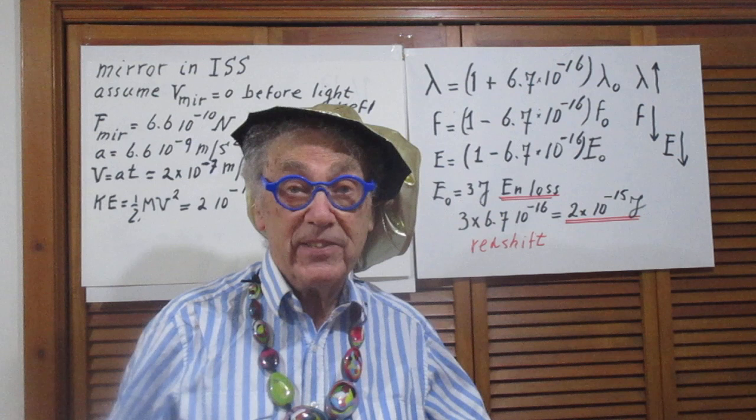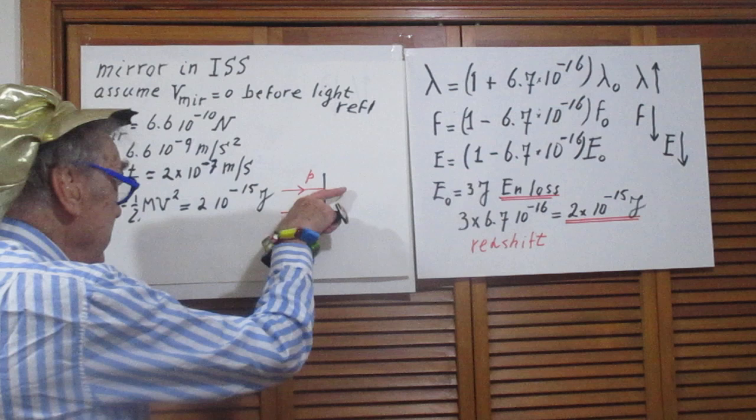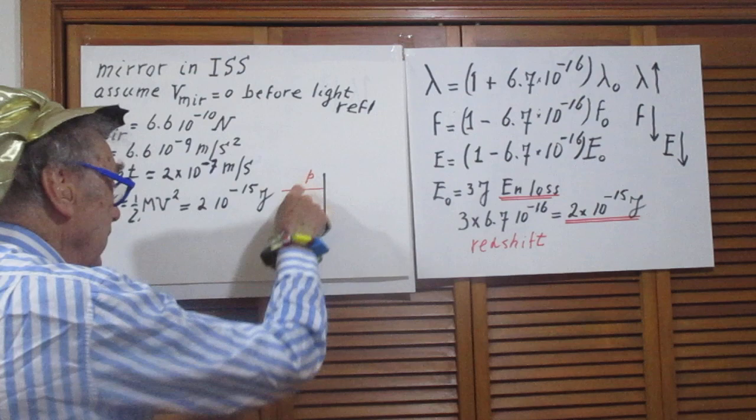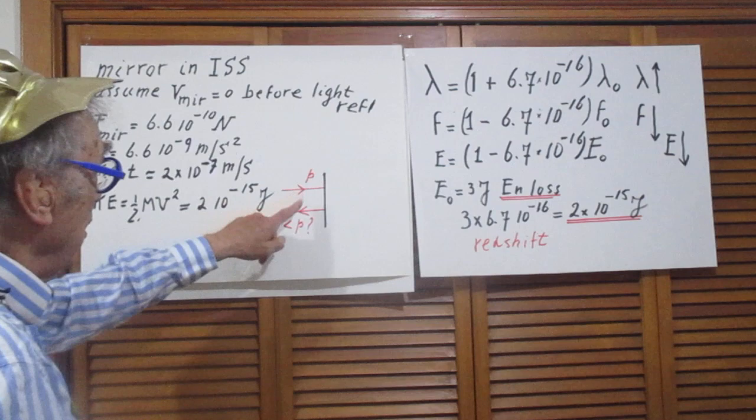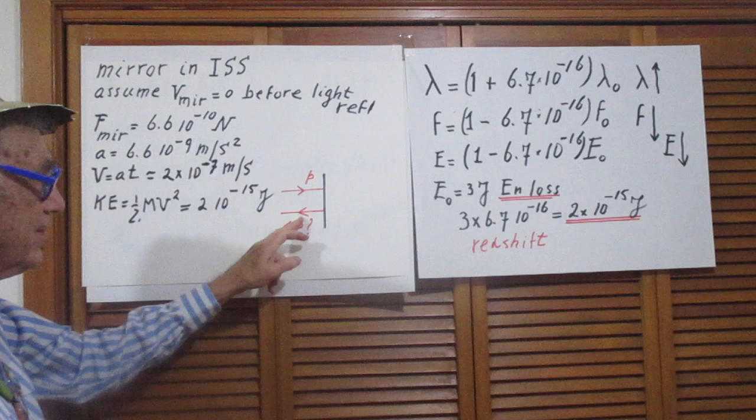And the question then was, where did this energy come from? It can only have come from the photons that reflected. Because the photons that come in have a momentum P, and therefore the momentum of the photons that are reflected must be lower than this P. That means that the energy is lower because the energy of photons is the momentum times C.